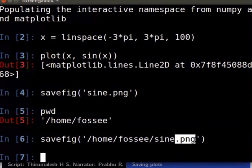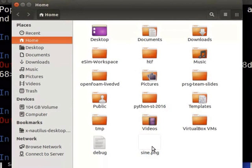Now let us locate the file sine.png which we had saved earlier. We have saved the file to /home/fossee. Let us navigate to /home/fossee using the file browser. Open sine.png to see the plotted sine curve.